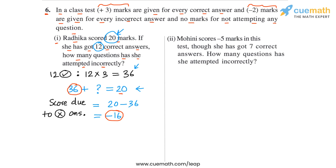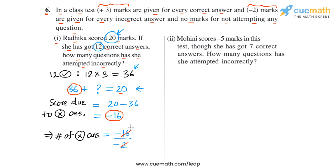From this score we can find the number of incorrect answers easily. The total score due to incorrect answers is minus 16, and the score per incorrect answer is minus 2. So we calculate minus 16 divided by minus 2. Because both dividend and divisor are negative, the quotient is positive, and 16 divided by 2 is 8. So for Part 1, the answer is that Radhika attempted 8 questions incorrectly.